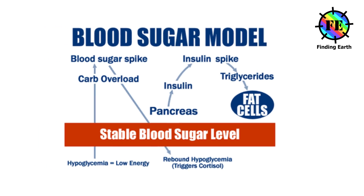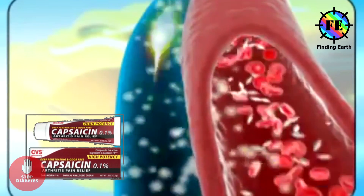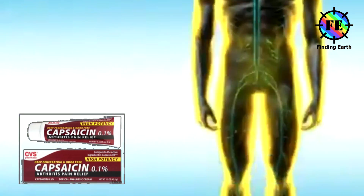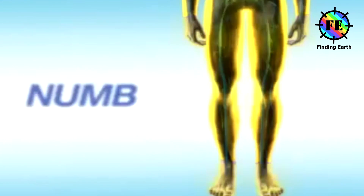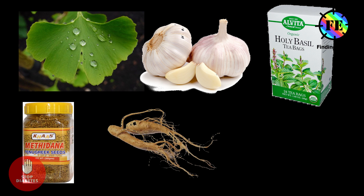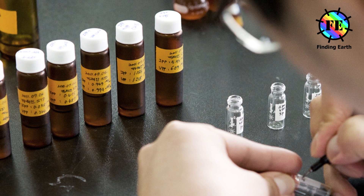Mind-body practices such as guided imagery, biofeedback, meditation, hypnotherapy, and yoga can reduce stress hormones and help stabilize blood sugar levels. Regarding herbal remedies, capsaicin cream has been reported to help lower pain from diabetic neuropathy. Evening primrose oil is thought to help diabetic nerve pain. Ginkgo, garlic, holy basil leaves, fenugreek seeds, ginseng, and hawthorn have been promoted as remedies for diabetic symptoms, but more research is needed. Always check with your doctor before trying any herbal product.